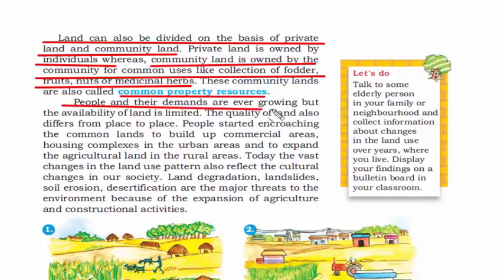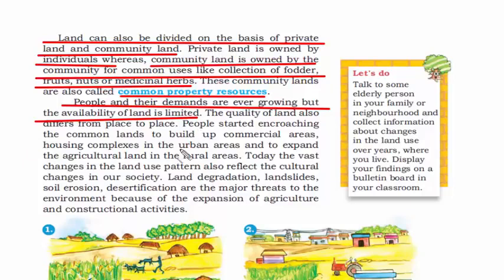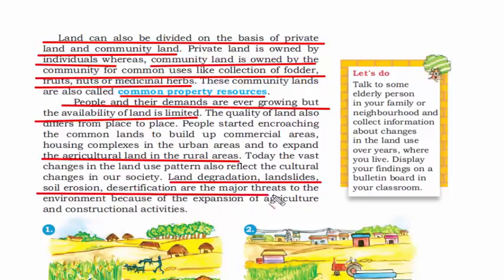Population increases day by day, yet land is limited, and no two places have the same quality of land. With the hunger for acquiring land, people start encroaching on common lands to build commercial areas like housing complexes in urban areas. In rural areas, they cut down forests for agricultural purposes. Because of all this, land degradation, landslides, soil erosion, and desertification are the major threats our environment is facing.